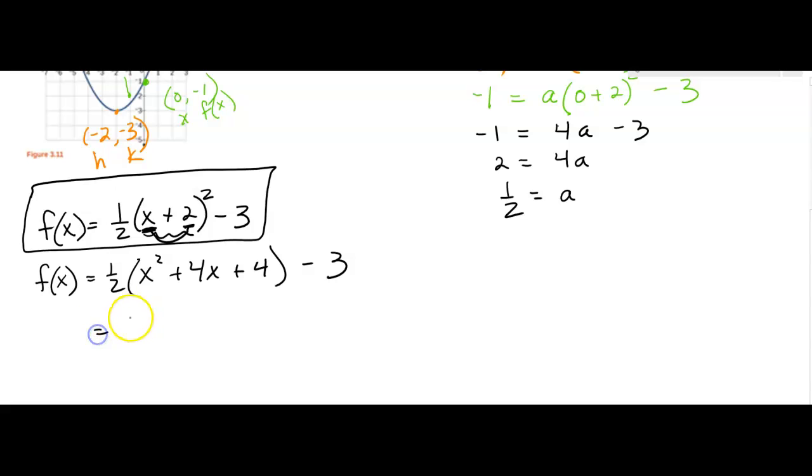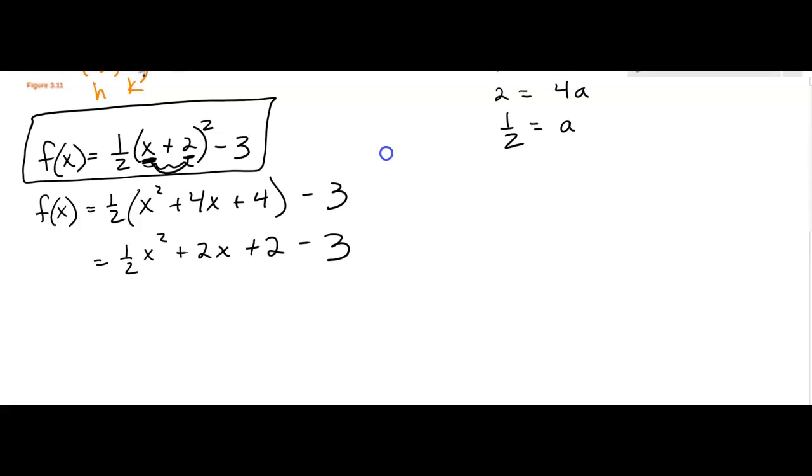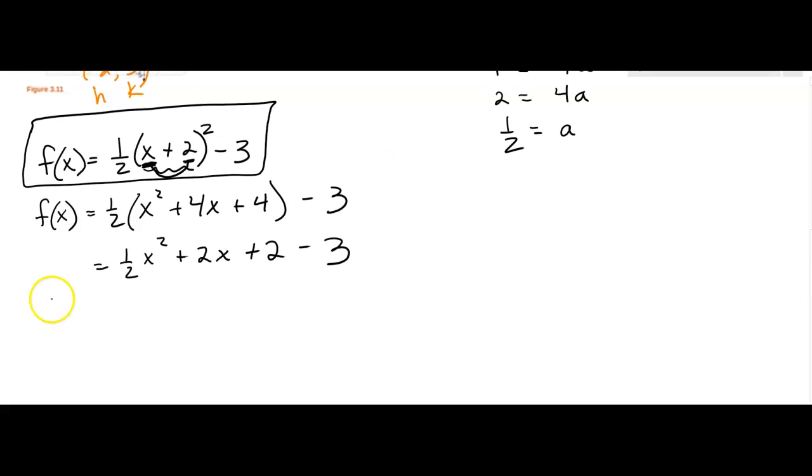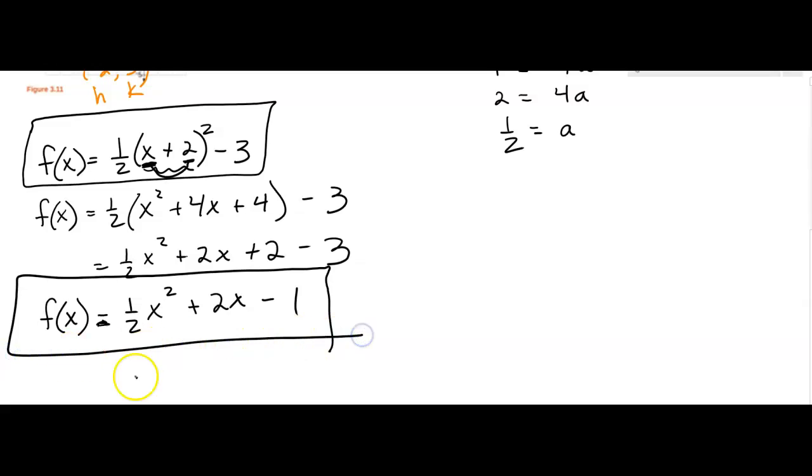Now I'll distribute the 1 half. So I get 1 half x squared plus 2x plus 2 minus 3. So one more step. And I'm going to get f(x) equals 1 half x squared plus 2x minus 1. And that would be in general form where I have the a and the b and the c, if anybody asks.